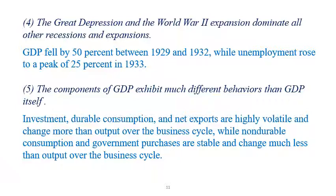The components of GDP exhibit much different behavior than GDP itself. The behavior of investment, durable consumption, and net exports are highly volatile and change more than output over the business cycle. In contrast, non-durable consumption and government purchases are stable and change much less than output over the business cycle.